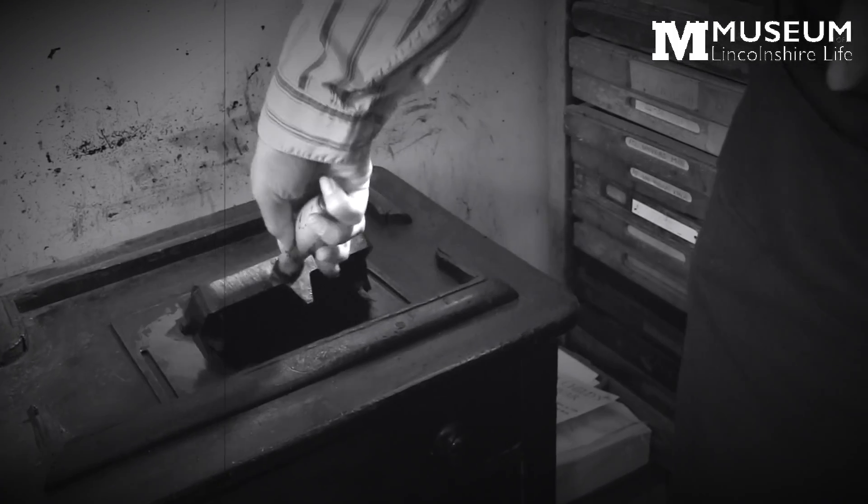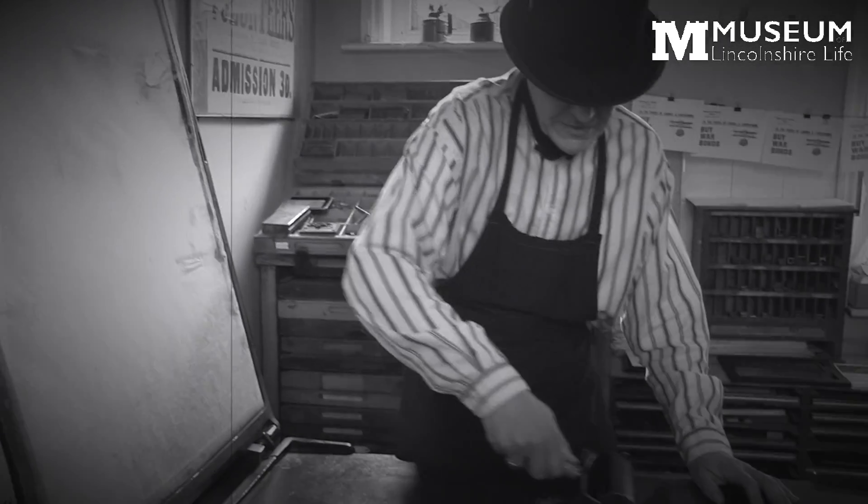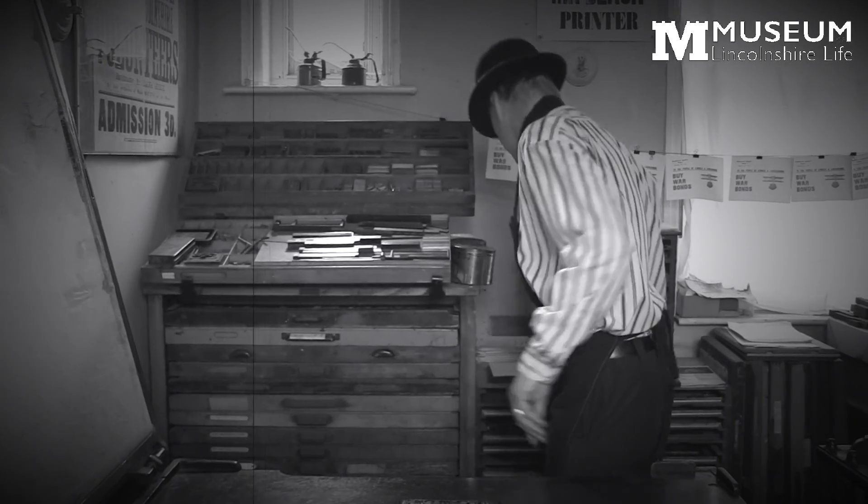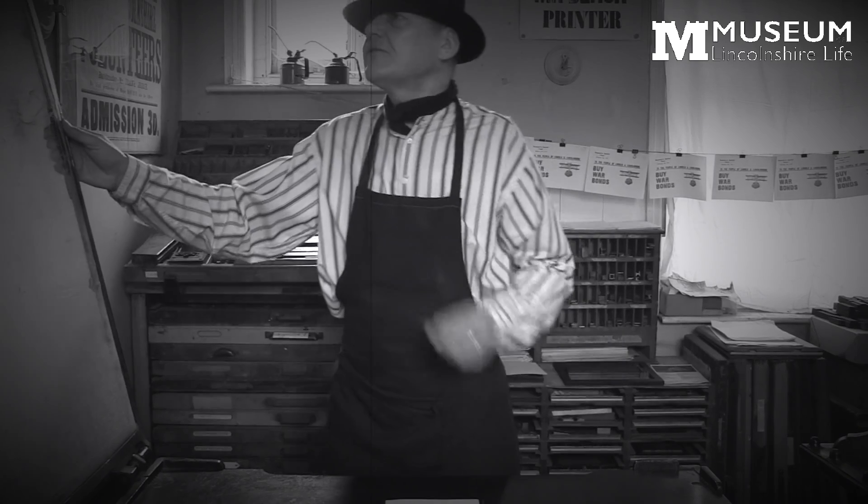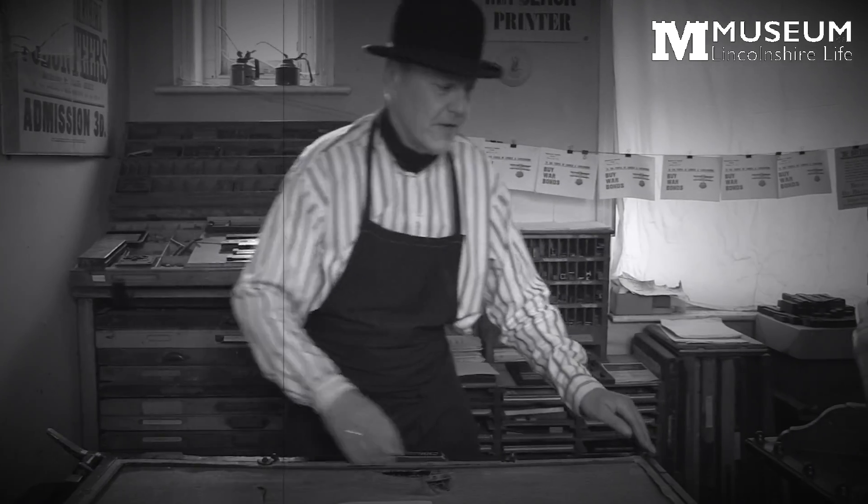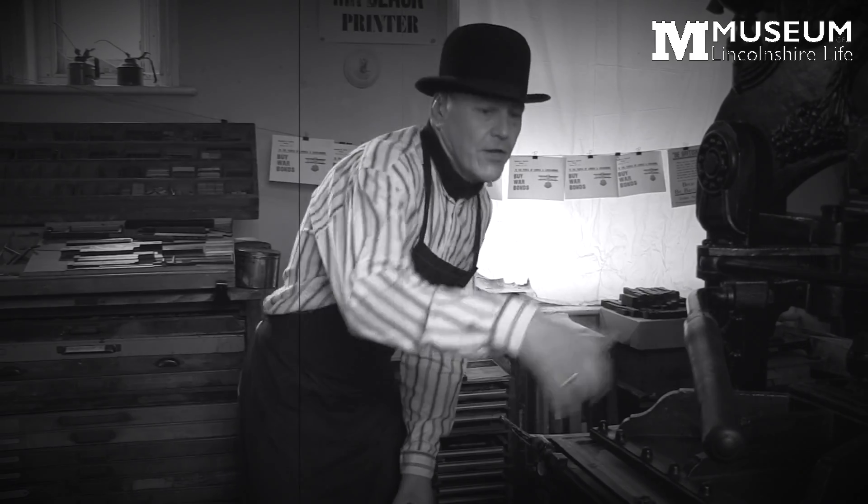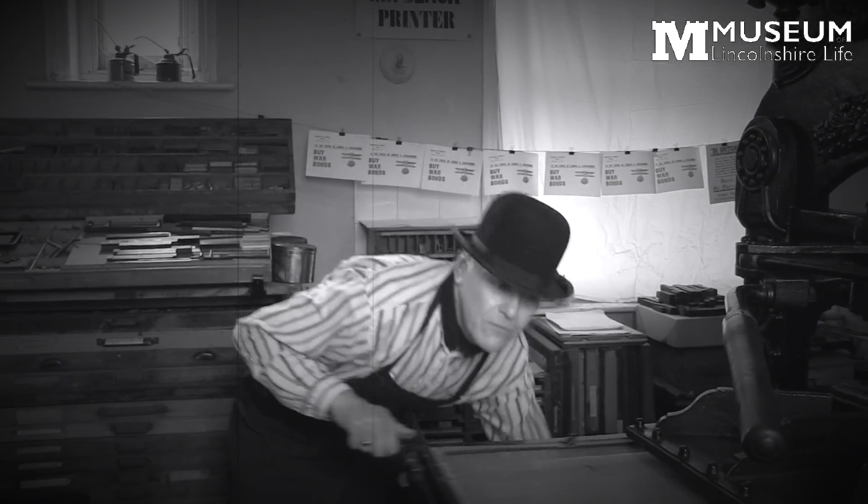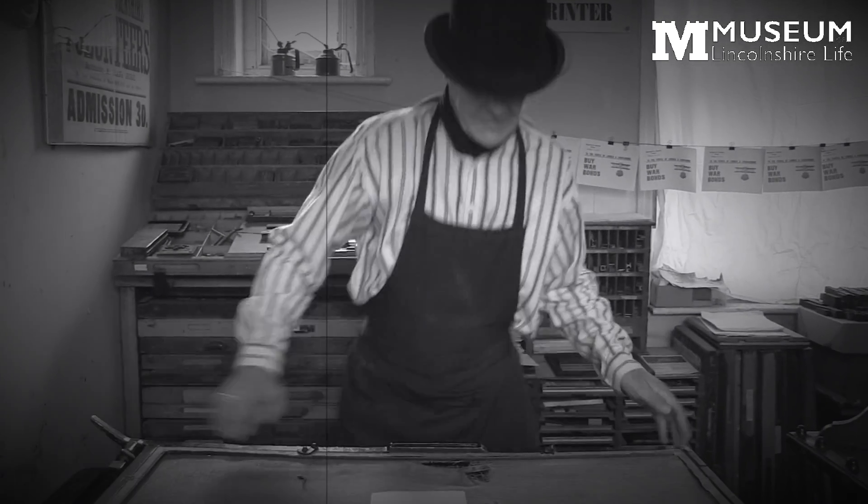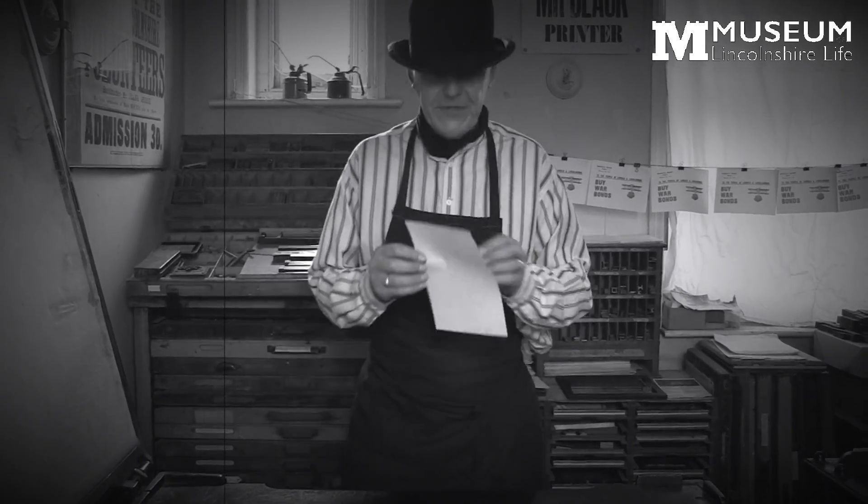All right, first you get the roller nicely inked. We spread the ink onto the plate and select a piece of paper, place it over, fold down the screen and roll it under. Pull the lever, which gives the actual press action, roll it back out, lift it up and there we have our printed piece.